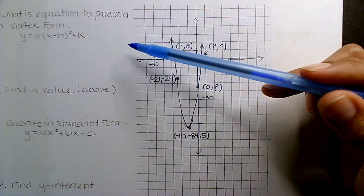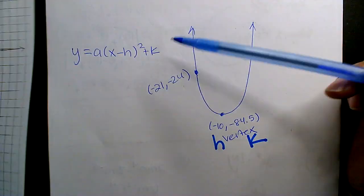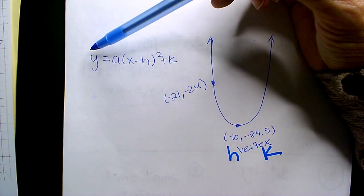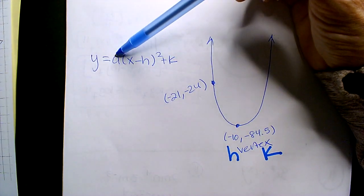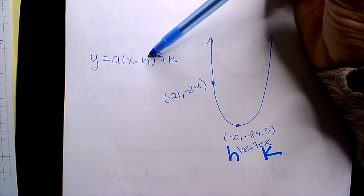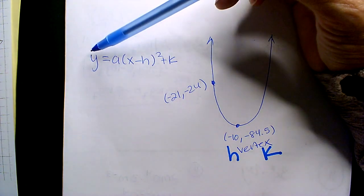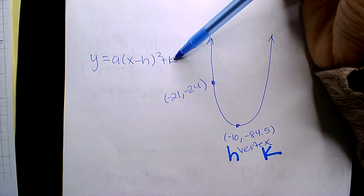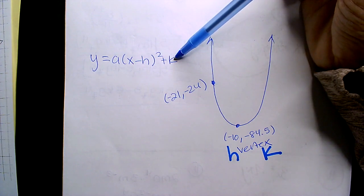These are the only two points that you have to use here because if you look at the equation, you have a Y variable, an A variable, an X variable, an H variable, and a K variable. You have one, two, three, four, five letters, right? You have five letters.